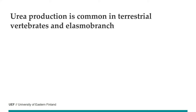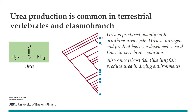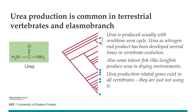Urea production is common in terrestrial vertebrates and also in elasmobranchs such as sharks, which are not close relatives of humans — so urea production has evolved several times in vertebrate evolution. Some teleosts also use it in drying environments, like the lungfish. Interestingly, all vertebrates have the genes to produce the enzymes for urea synthesis — they are just not using them.